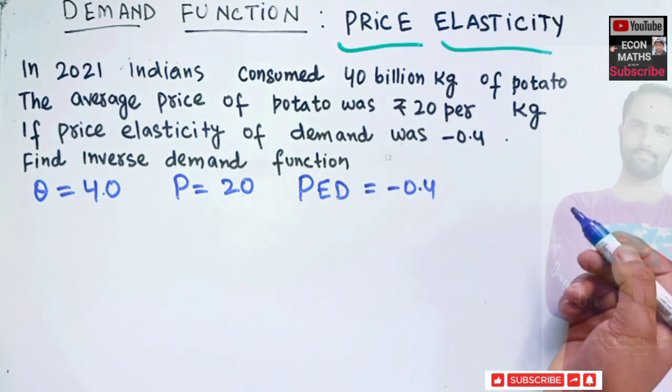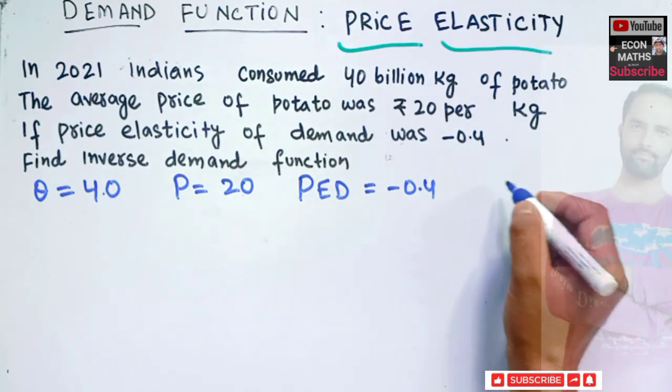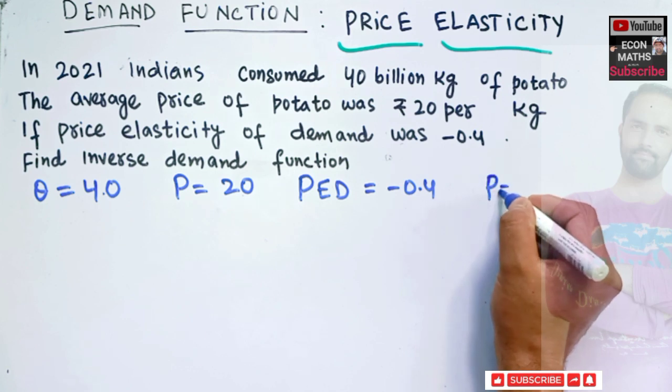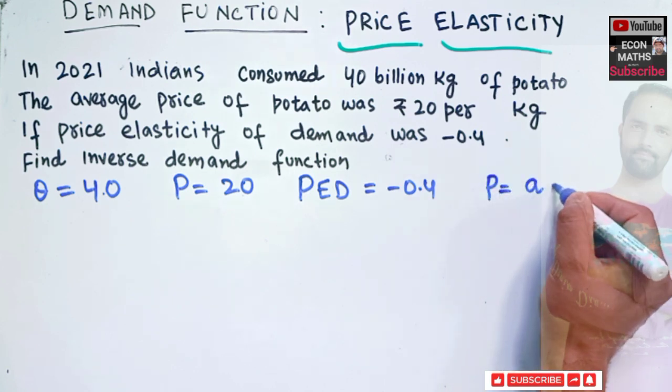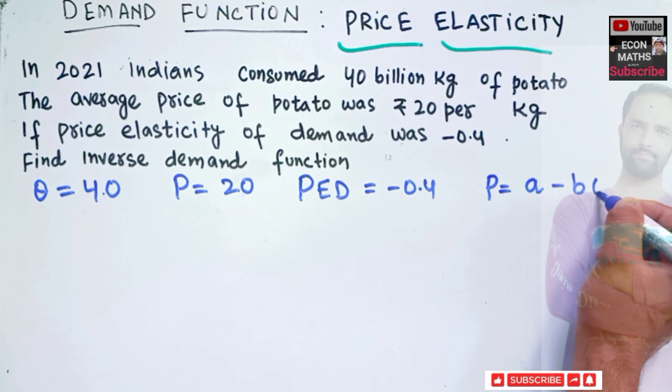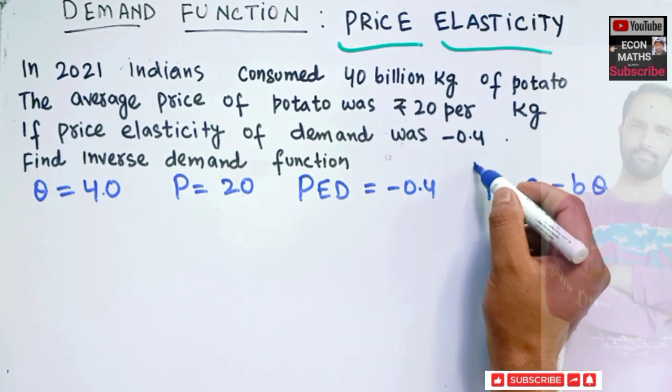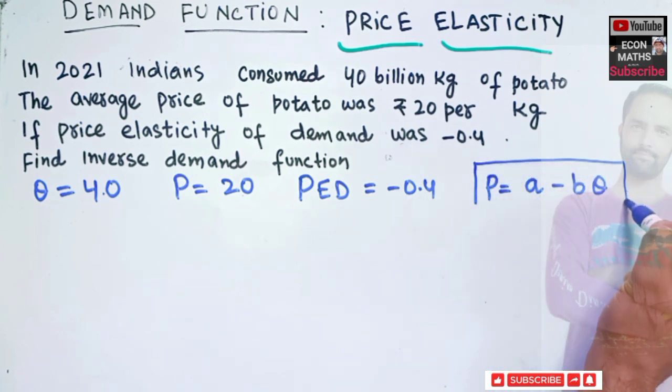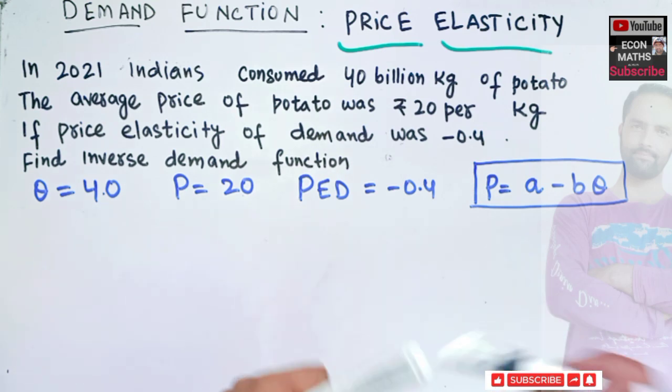And we need to derive the inverse demand function. That will look like this: P is equal to A minus BQ. When price is being expressed in terms of quantity, we say it is an inverse demand function. So, we need to derive this very function here.